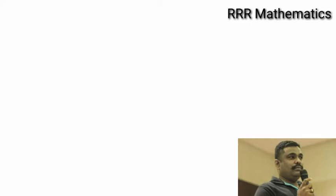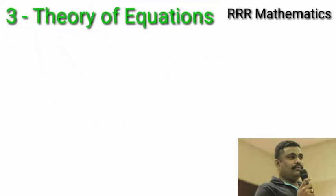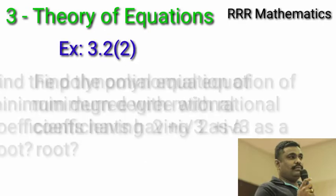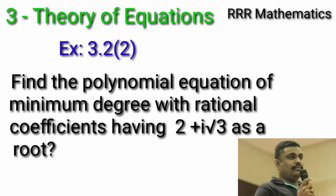Hi my dear student, today we will discuss Chapter 3 Theory of Equations, Exercise 3.2 Question number 2. Find a polynomial equation of minimum degree with rational coefficients having 2 plus i root 3 as a root.